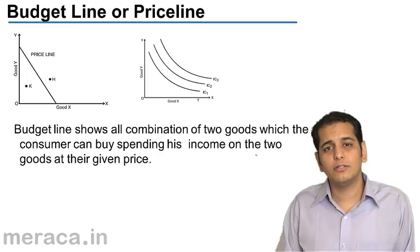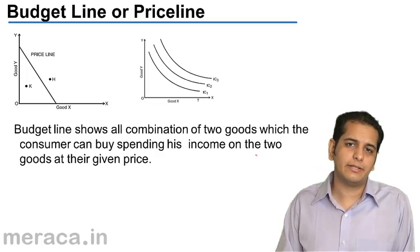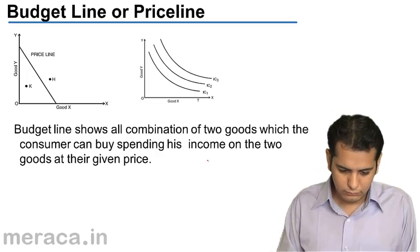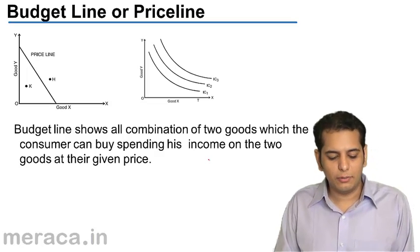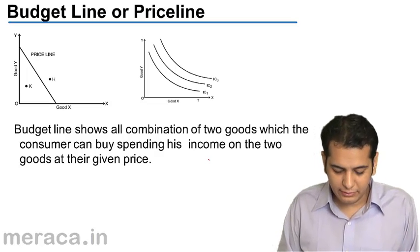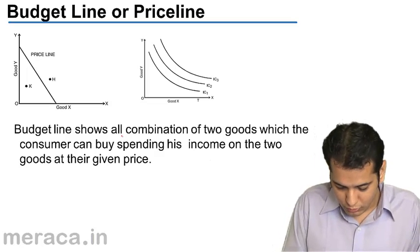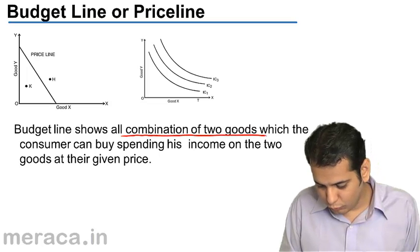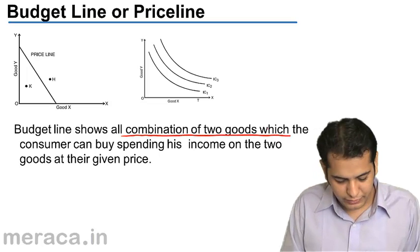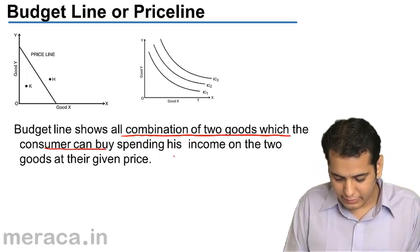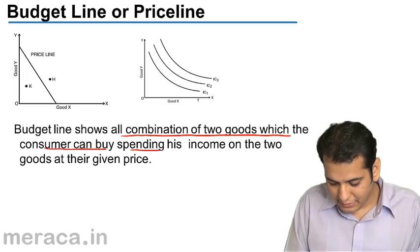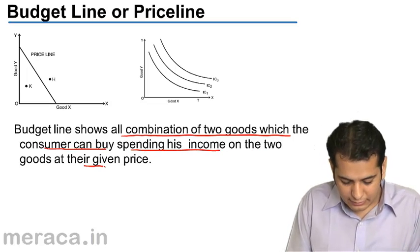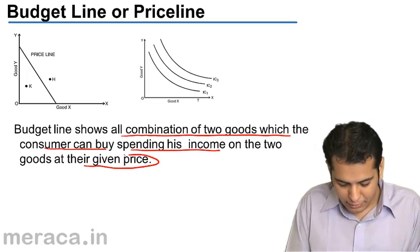Let's see what is a budget line. A budget line or a price line shows all combinations of two goods which the consumer can buy, spending his income on the two goods at a given price.